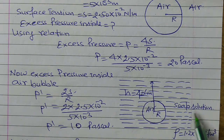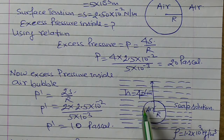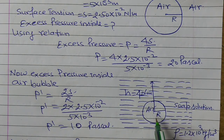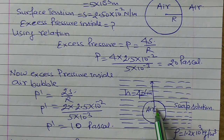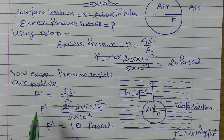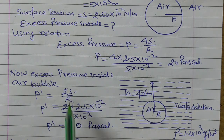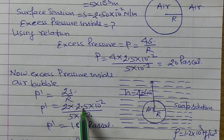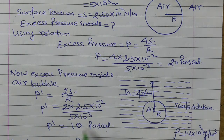This air bubble is inside the soap solution at a depth of 40 cm. So first we calculate the excess pressure. In this case the excess pressure is 2S/R, because here there is only one interface — air is inside and liquid (soap solution) is outside. So for one interface, excess pressure P' = 2S/R. Putting values: 2 × 2.5×10⁻² / 5×10⁻³ = 10 Pascal. So this is the excess pressure inside the air bubble.